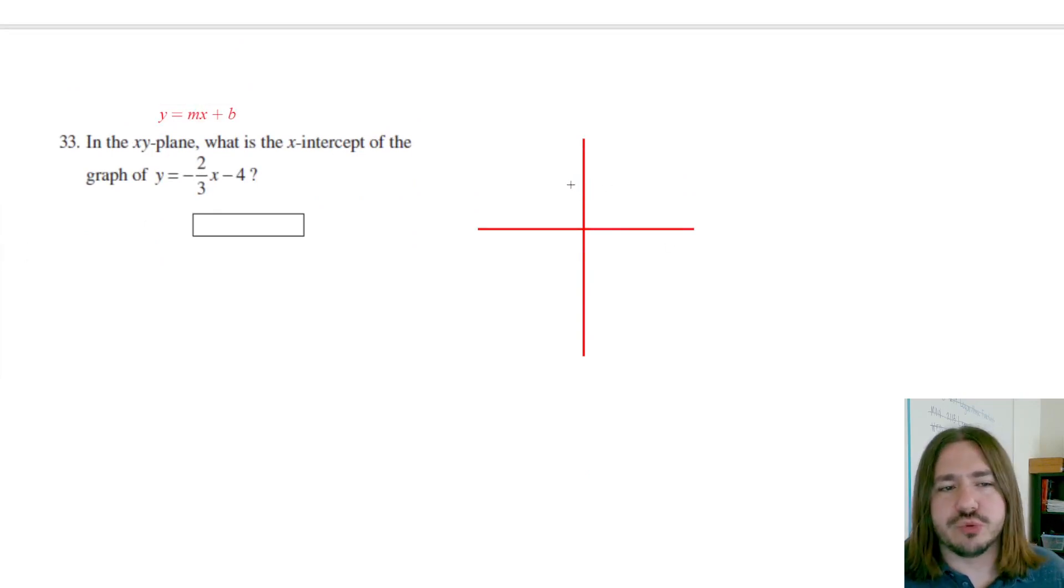I just want to give you a visual here. The y-intercept is going to be negative four. That's going to be somewhere down here. The slope is down two over three. So the line is going to look roughly like this. This is just going to be a totally rough sketch. But just to give you an idea of where the x-intercept should be, it should be negative, right? It's going to be somewhere over here. If I had to guess, probably like negative six or something, maybe negative eight, somewhere over there.